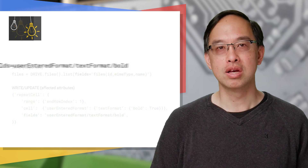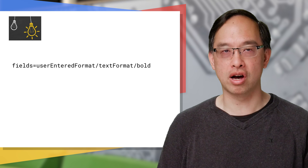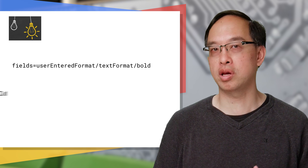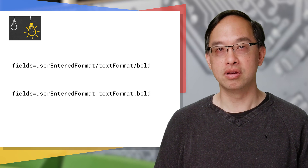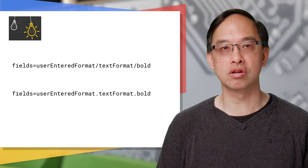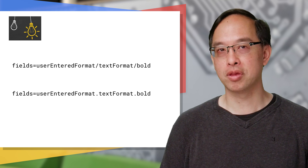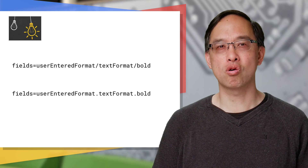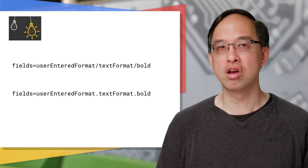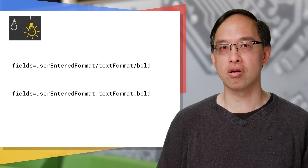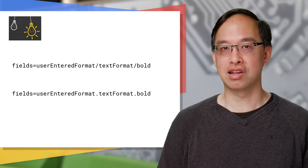Tip two: some recent APIs have also started supporting the dotted attribute notation, so you can use periods instead of slashes. This makes the APIs more consistent with Google protocol buffers. But not all APIs support it yet — if you try it and it doesn't work, you'll get an HTTP 400 error and need to change the dots back to slashes.